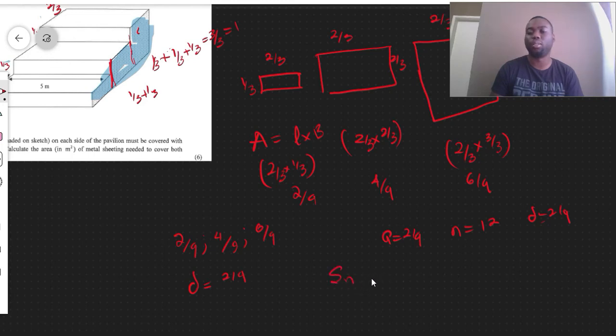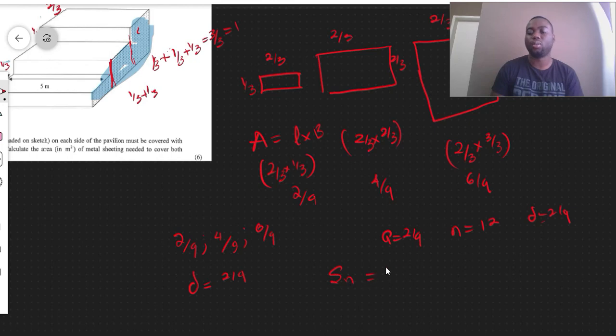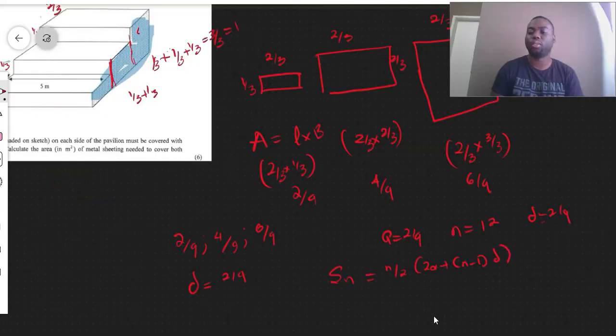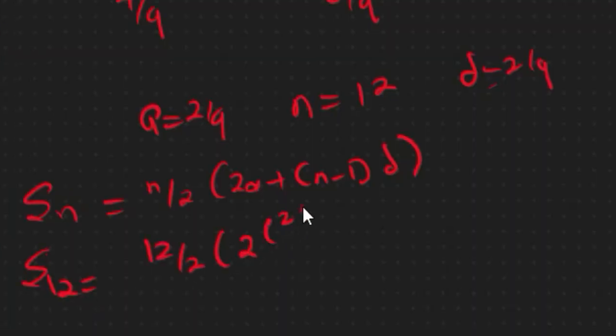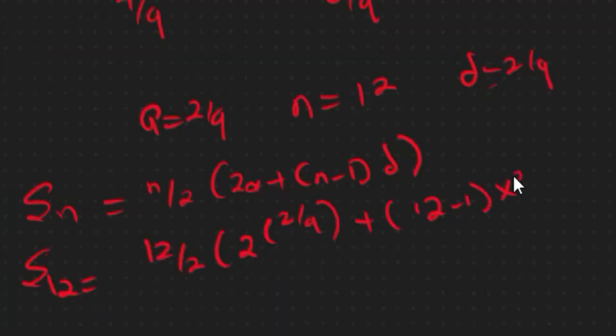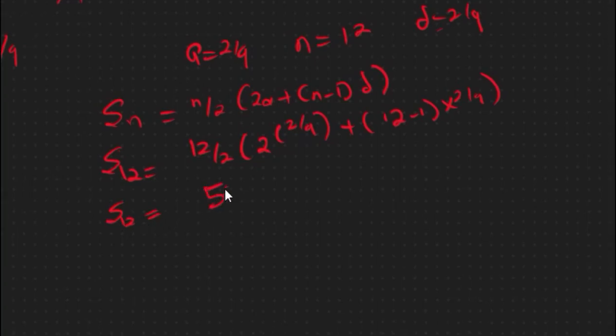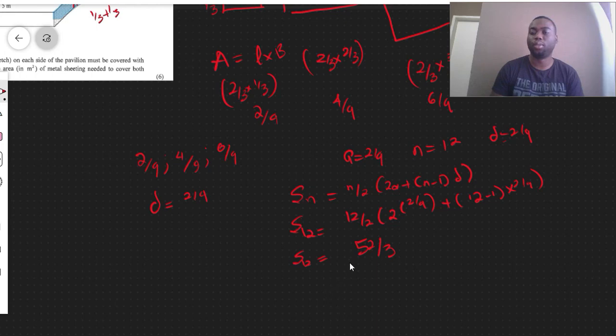The sum formula for a geometric sequence is SN equals... that over there. And after that we just need to substitute. So it's S12. So your final answer here would be 52 over 3.